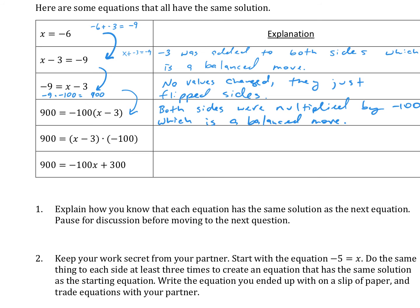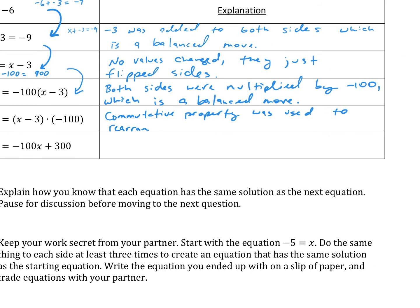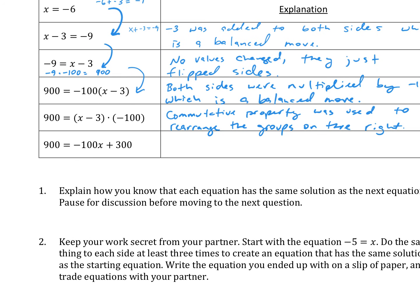The next step looks like they moved the negative 100 from in front of (x minus 3) to behind it. Basically, the commutative property was used to rearrange the groups on the right side. Even though you're switching the places of the numbers, the commutative property tells us that's okay because you'll still end up with the same product when you multiply.